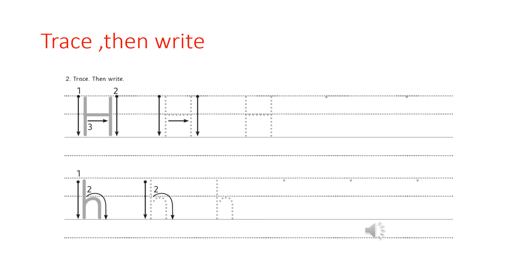How to write lowercase h? That's small h. Start from the top and draw a line down. And then go up and around the middle and going back to the bottom.